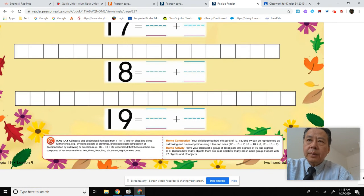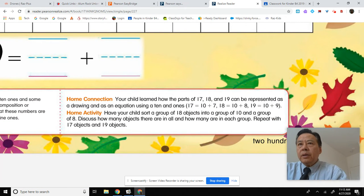See what this says over here? Home Connection. Your child learned how the parts of 17, 18, and 19 can be represented as a drawing and as an equation using a 10 and 1. 17 equals 10 plus 7, 18 equals 10 plus 8, 19 equals 10 plus 9. All right, that's self-explanatory. Home Activity: Have your child sort a group of 18 objects into a group of 10 and a group of 8. Discuss how many objects there are in all and how many are in each group. Repeat with 17 objects and 19 objects. So basically use manipulatives to get your child to understand numbers and objects and number sentences in a concrete, tangible way.